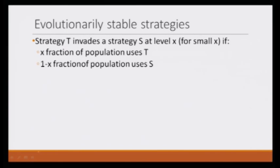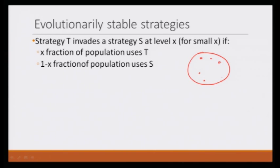Strategy T invades strategy S at level x if x fraction of the population uses T and 1 minus x fraction of the population uses S. Let us say that the beetle world is entirely made of small beetles, and now let us say x fraction of large beetles are introduced. That is what we are saying: strategy S is small and strategy T is large.